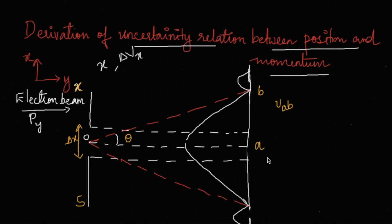For this, we place a screen S having a slit with width delta x. Now when the electron passes through the slit, its position in the vertical direction is known. If you want to improve the accuracy of knowing its position, we may narrow the slit further.